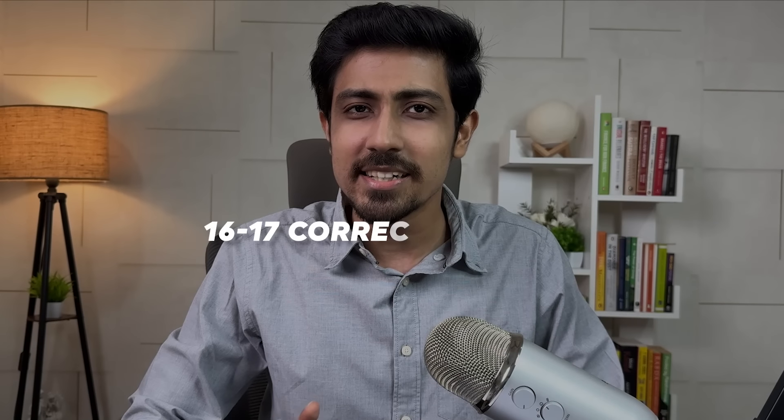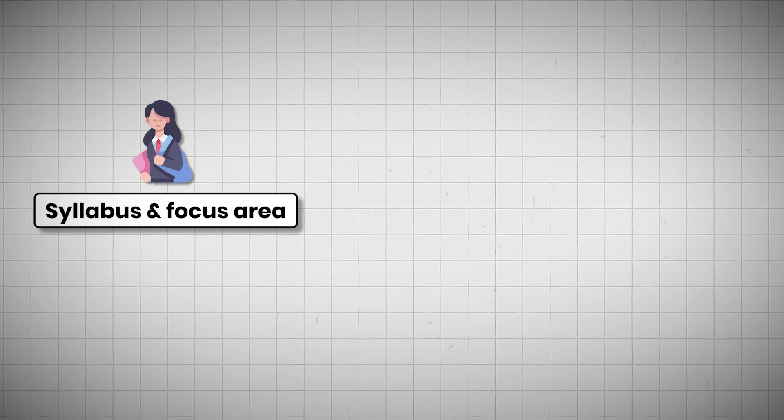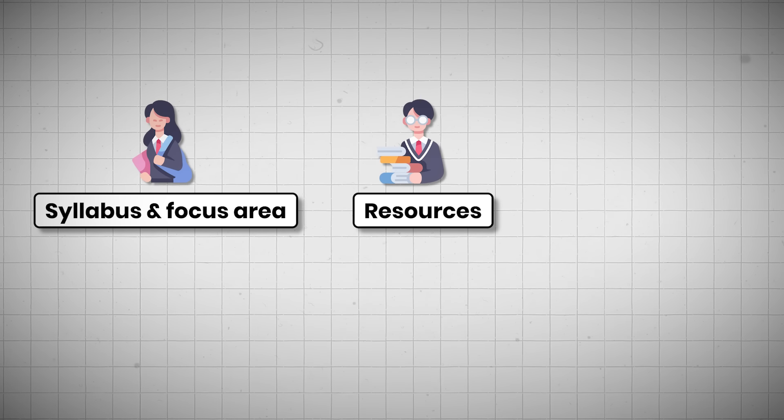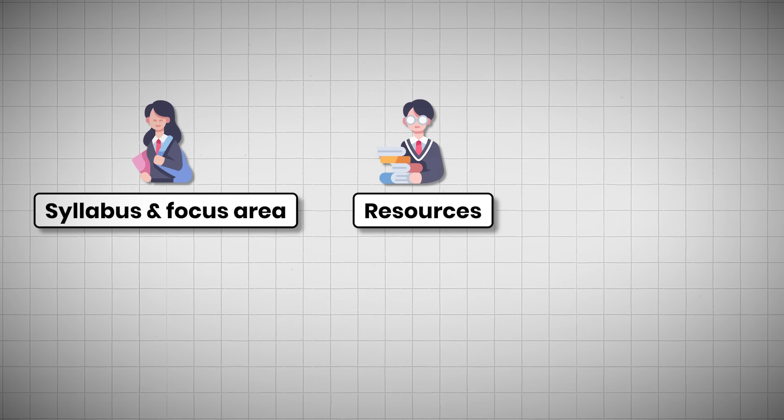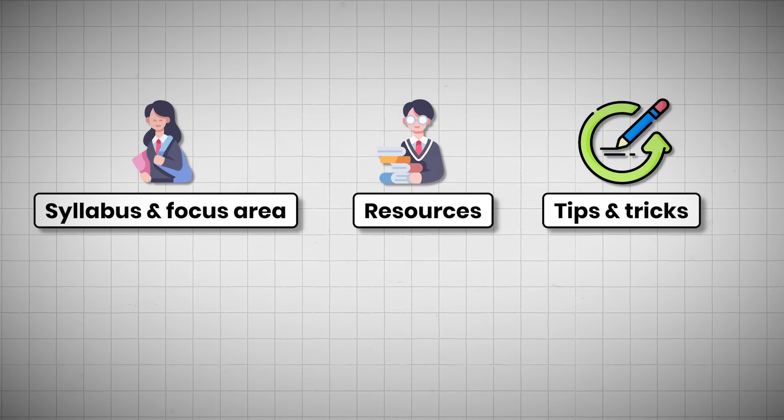CAT paper में 24 questions होते हैं, 72 marks का paper होता है। आपको अगर यह score target करना है, you have to get at least 16-17 correct after negative as well, फिर आपका score 40 के ऊपर रहेगा। तो हमारा target for each and every exam 16-17 questions रहेगा। इस video में मैं 3 चीज़ें cover करूंगा - first है syllabus and focus area, second है resources, और third है tips and tricks for verbal preparation। First दो चीज़ें काफी generic हैं but third one is very important।